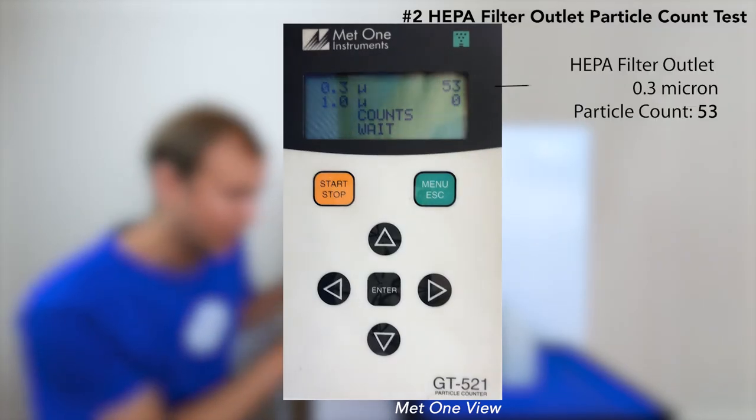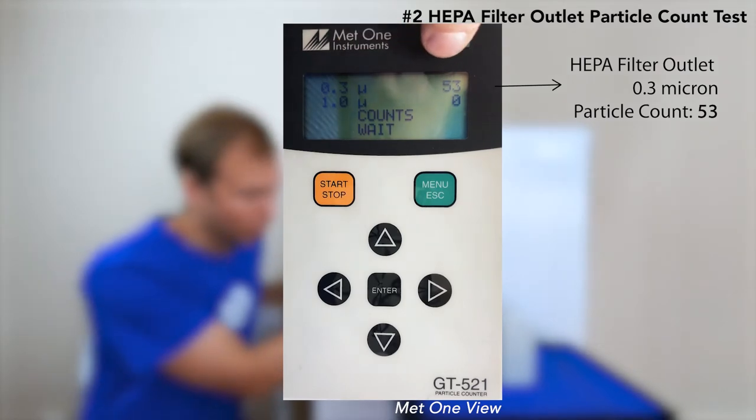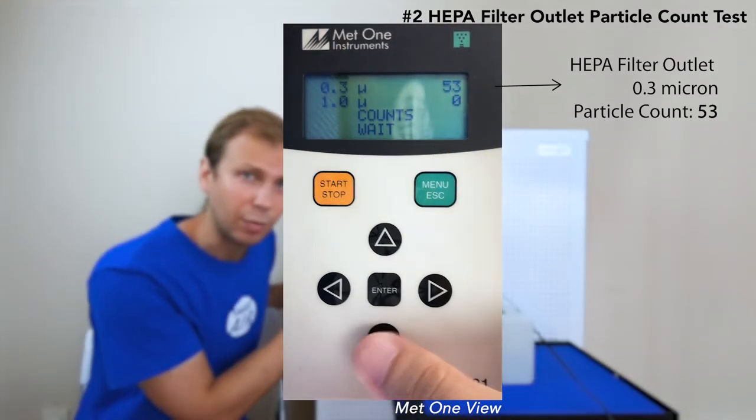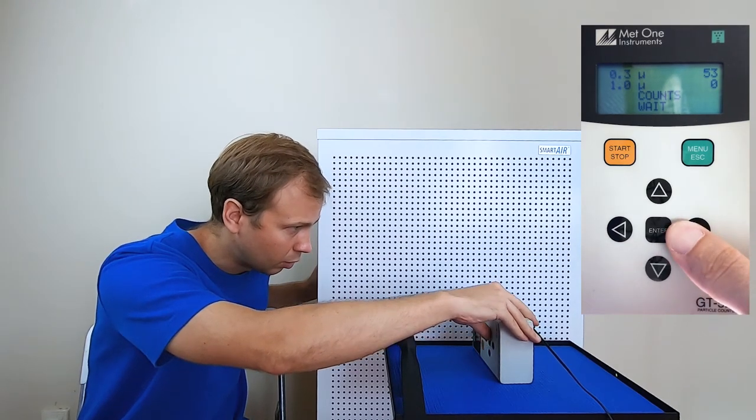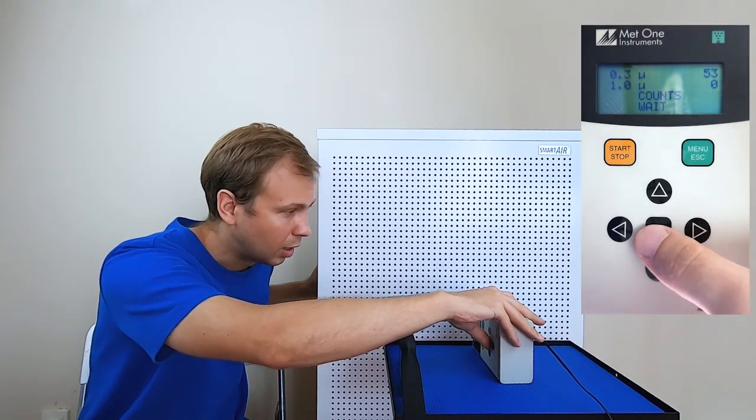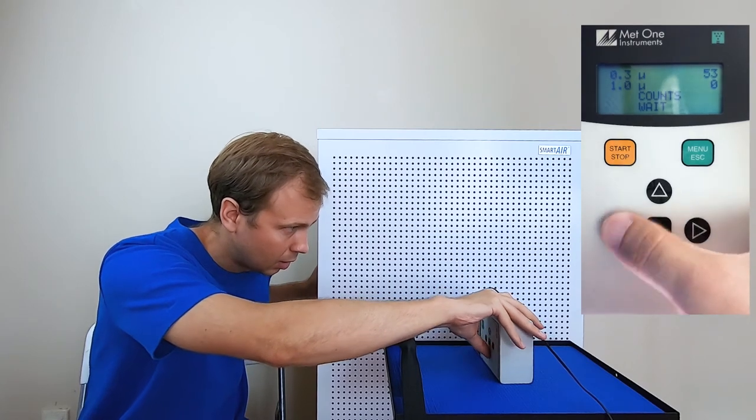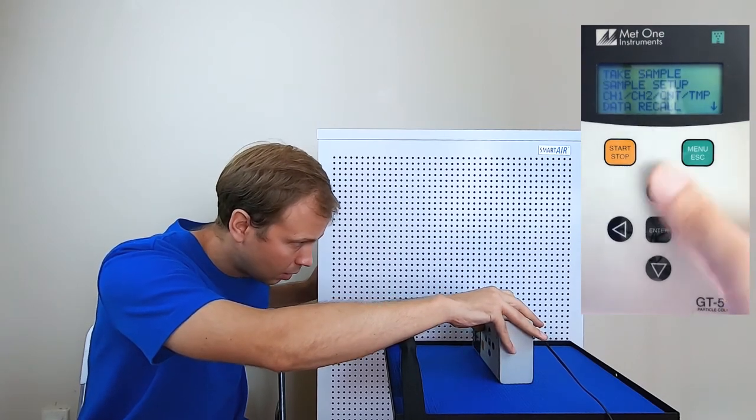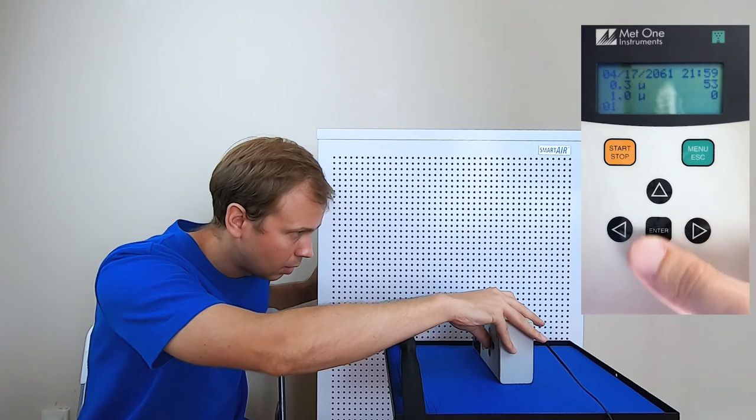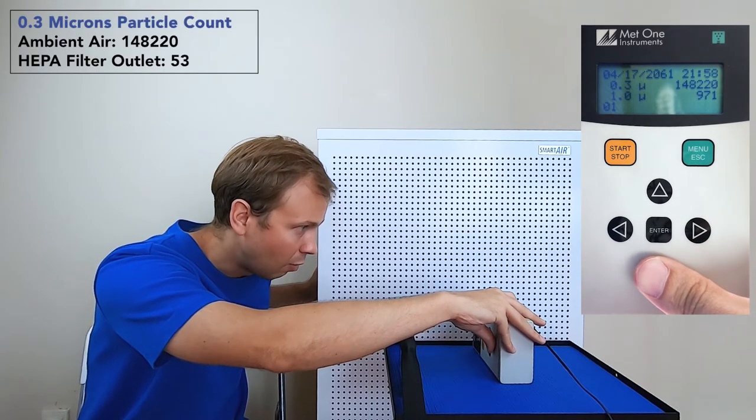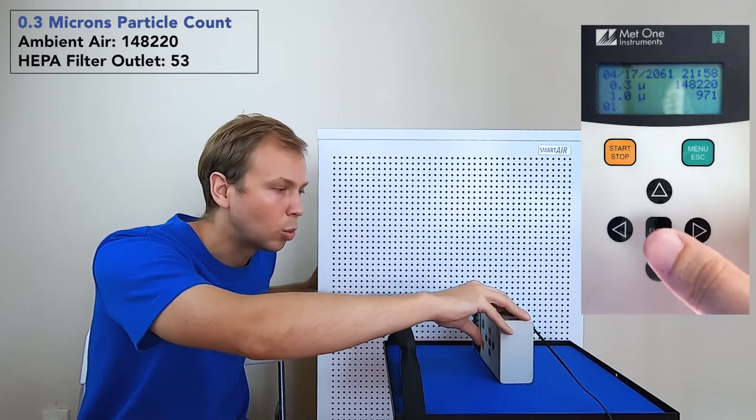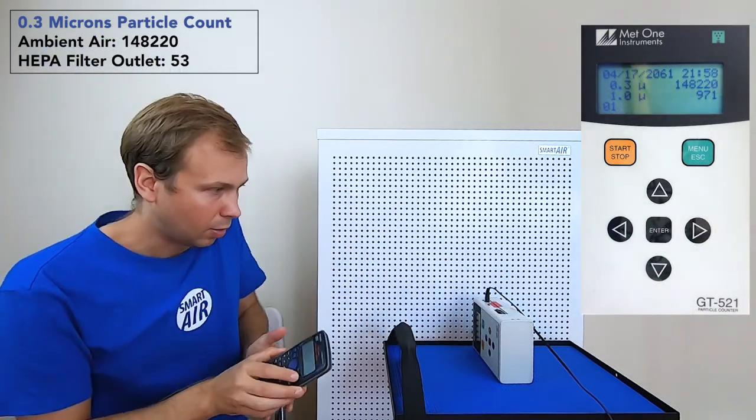What we can see is with the BLAST turned on, the 0.3 particle count is only 53. If we compare 53 with the previous results of 148,220, let's take out our calculator here.